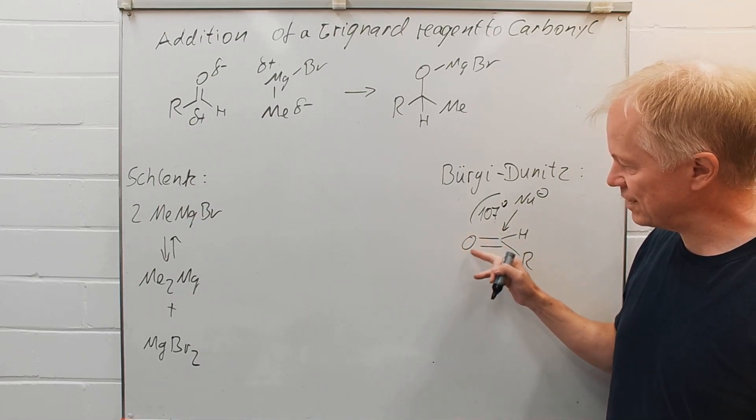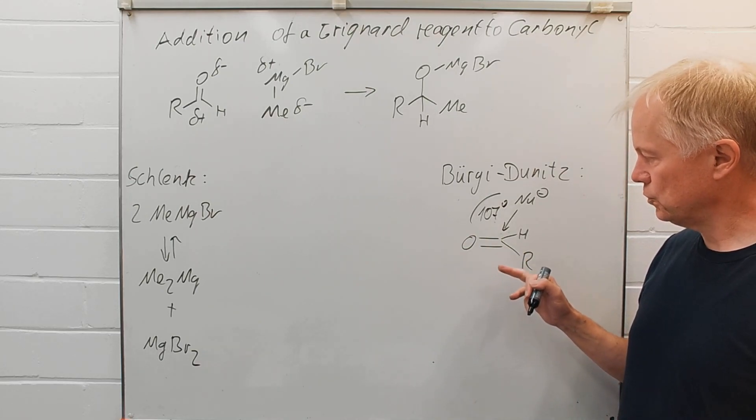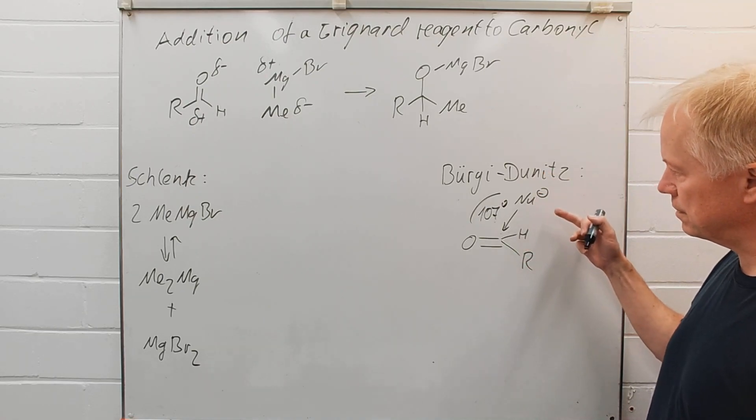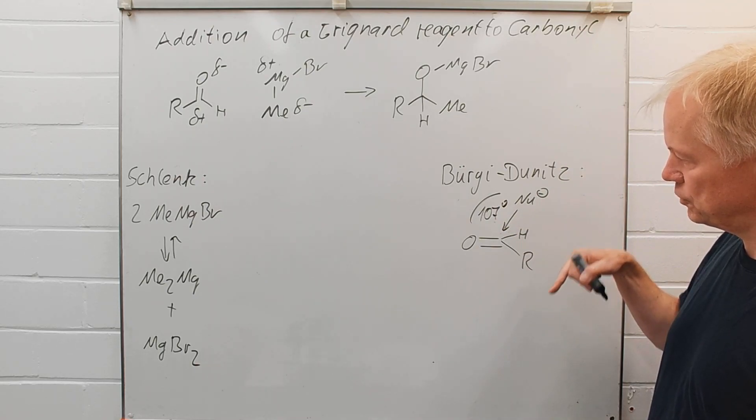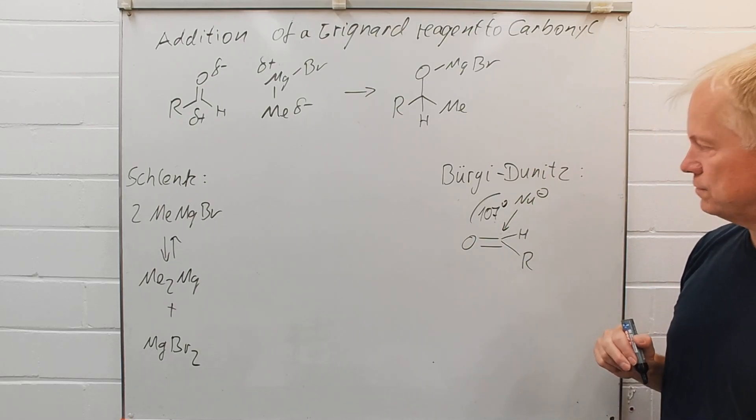This is the case because the negative charge of the nucleophile tries to avoid the negative electron density of the carbonyl group, so that the ideal angle of attacking the carbonyl group is not 90 degrees but 107 degrees.